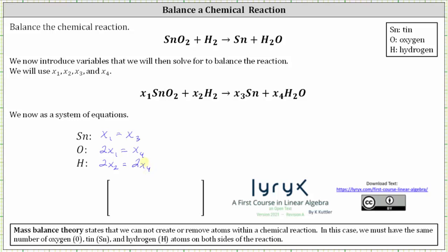Let's write these equations as homogeneous equations by setting the right side equal to zero. For the first equation, we subtract x sub three on both sides, which gives us x sub one minus x sub three equals zero. For the second equation, we subtract x sub four on both sides, which gives us two x sub one minus x sub four equals zero. For the last equation, we subtract two x sub four on both sides, which gives us two x sub two minus two x sub four equals zero.